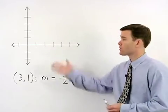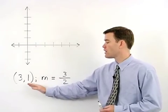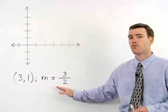In this problem, we're asked to graph the line that contains the point and has a slope of 3 halves.